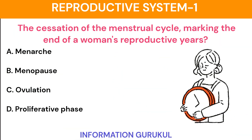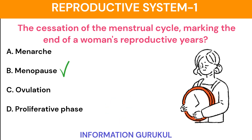The cessation of the menstrual cycle marking the end of a woman's reproductive years is called what? Menopause.